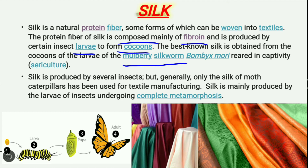Sericulture is the process of obtaining silk from silkworms — making fiber from silkworms and then fabric from that fiber. This entire process of obtaining silk from silkworms is called sericulture.